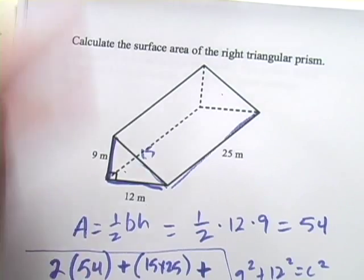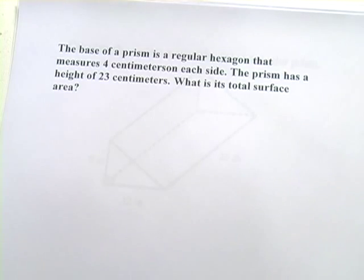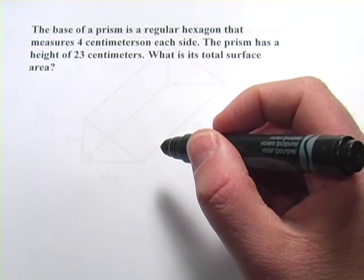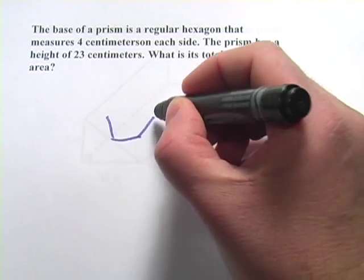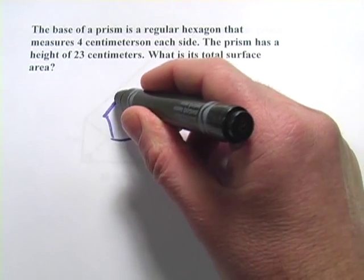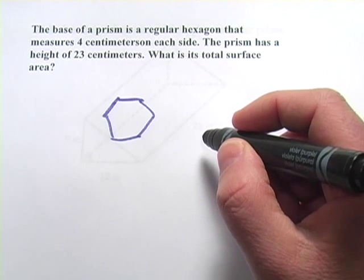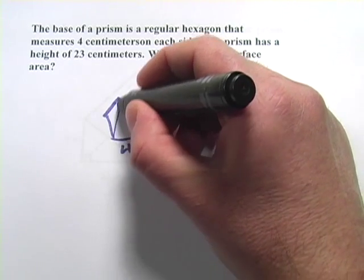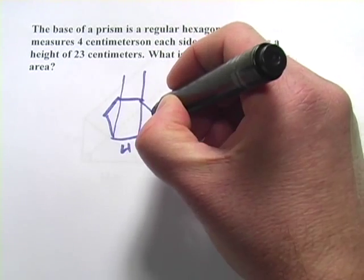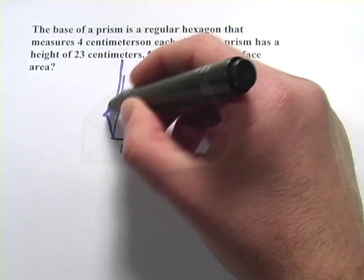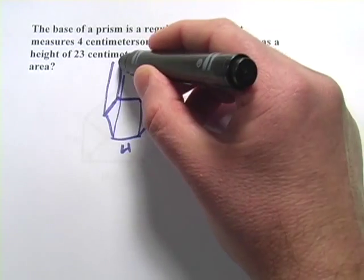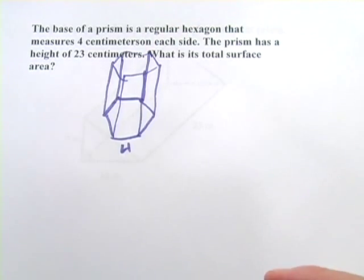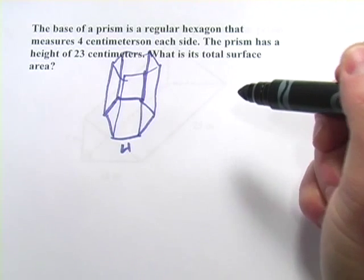Let's work on this next one. It says the base of a prism is a regular hexagon. Okay, so we've got a six-sided regular figure here that measures 4 centimeters on each side, and the prism has a height of 23 centimeters. So imagine all these sides going up here and connected by another hexagon at the top. I don't think I drew this terribly accurately, but you get the basic idea. And we want to find the total surface area.